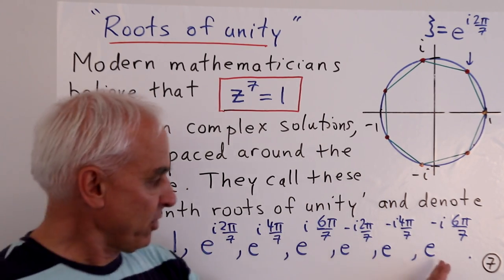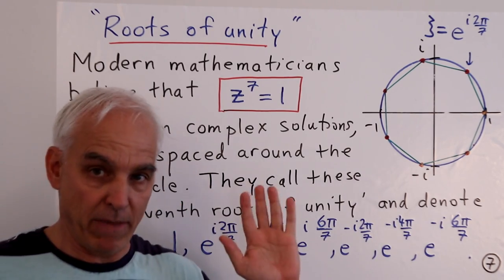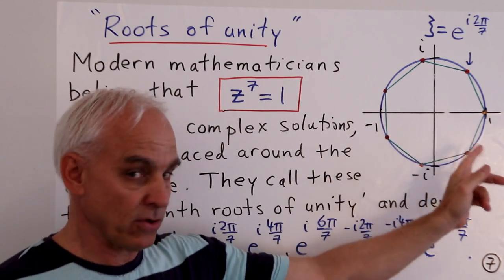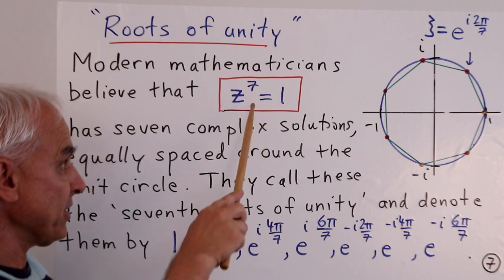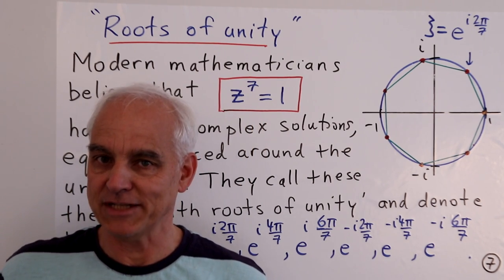So your typical modern mathematician is absolutely convinced, no question whatsoever about it, that there are exactly seven complex numbers, here they are, that are exactly on the unit circle, equally separated, that are the solutions to this simple equation z⁷ = 1.